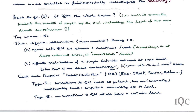Call such a general theory macro-realistic. The best-developed example is the GRWP theory—Girardi-Rimini-Weber-Pearl. More qualitative approaches have been proposed by Penrose, Adler, and various others.